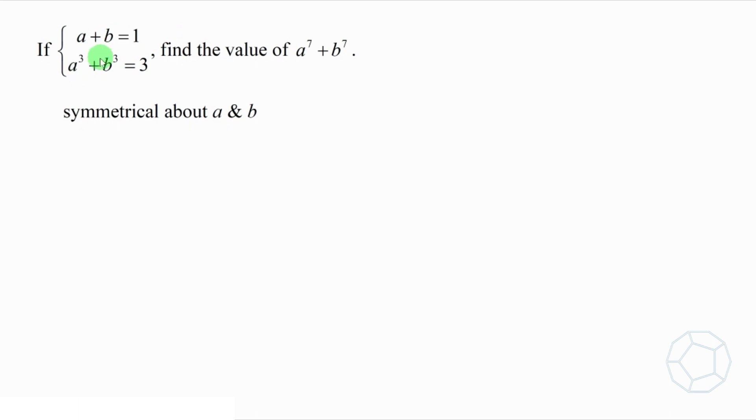In other words, if you swap a and b in the two equations, there's no change. So we're going to find the value of ab, which is also symmetrical. It helps us find the sum of the other powers of a and b, such as sum of squares and sum of power 4.